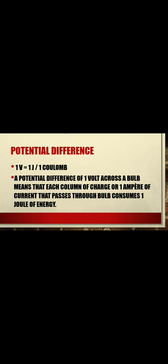We write: 1 volt = 1 joule divided by 1 coulomb. We can also say that a potential difference of one volt across a bulb means that one coulomb of charge — or one ampere of current — passing through the bulb consumes one joule of energy. This is a very simple definition.